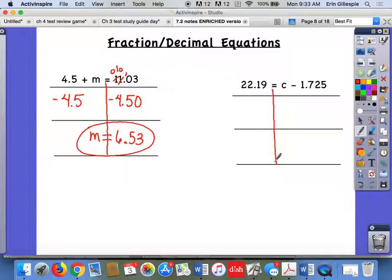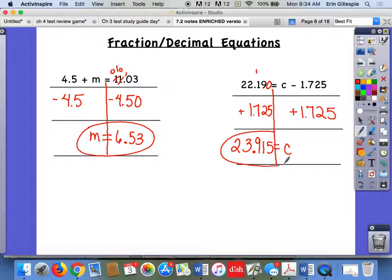Over here, the variable's on the right instead of on the left. So we want to be looking over here. We're subtracting 1.725. So we want to add that amount to both sides. And again, we want to line up the decimal. I might want to rewrite it here because, well, I guess I put these in the 0 there. So 1.725. Add that up. So 0 plus 5. 9 plus 2 is 11. Carry the 1. That's going to be 9. Bring down the decimal. 2 plus 1 is 3. And then bring down your 2. So 23.915 equals C.